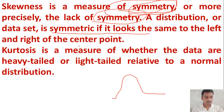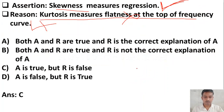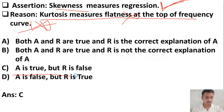However, kurtosis is a measure of whether the data are heavily tailed or light tailed — not flatness at the top of the frequency curve. So the reason is false. Therefore, option C is the correct answer: assertion A is true, but reason R is false.